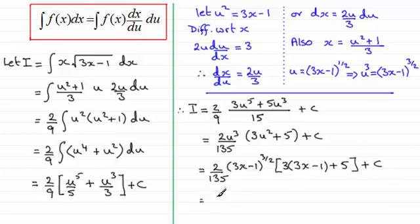Nearly there now, just copy the front bit out. 2 over 135 times 3x minus 1 to the power 3 over 2.